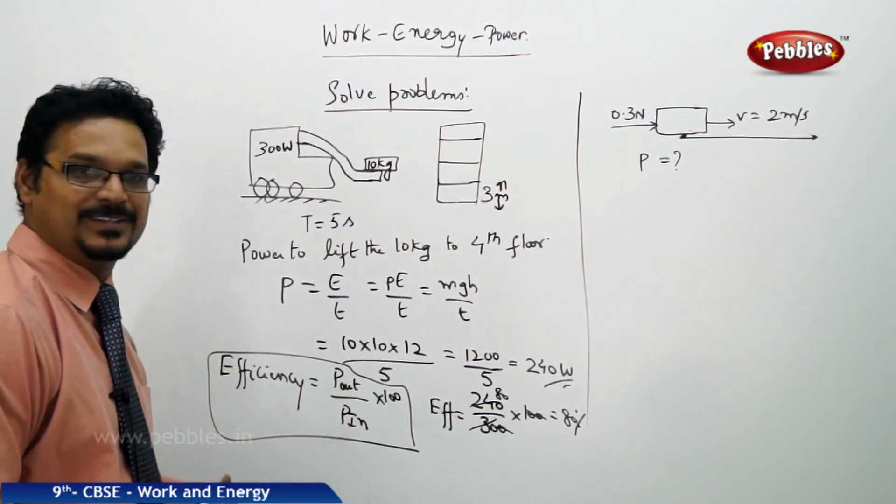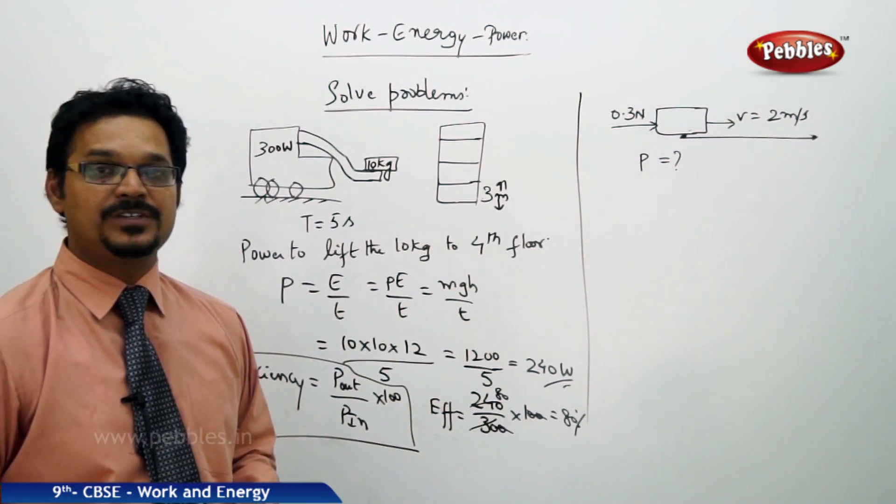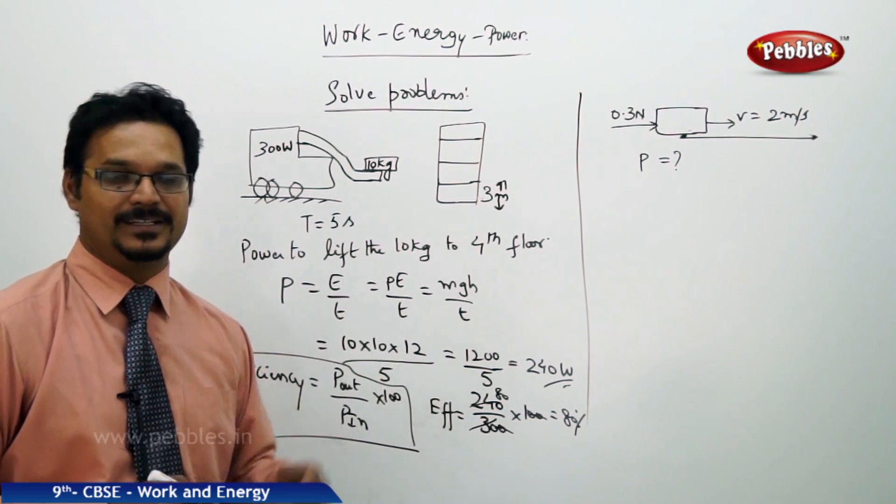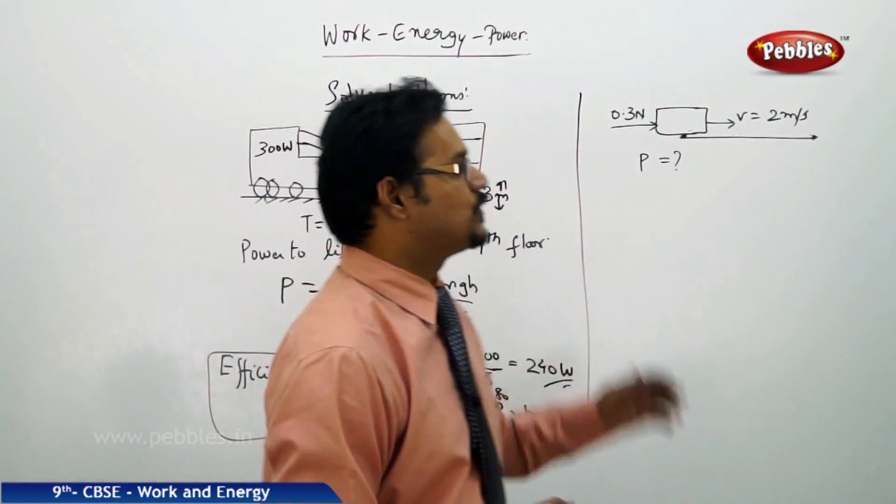The efficiency of the crane is 80 percent, it is not 100 percent. Then what happened to the rest of the 20 percent? The 20 percent is energy wasted in the form of heat. So it can do only 80 percent of work.